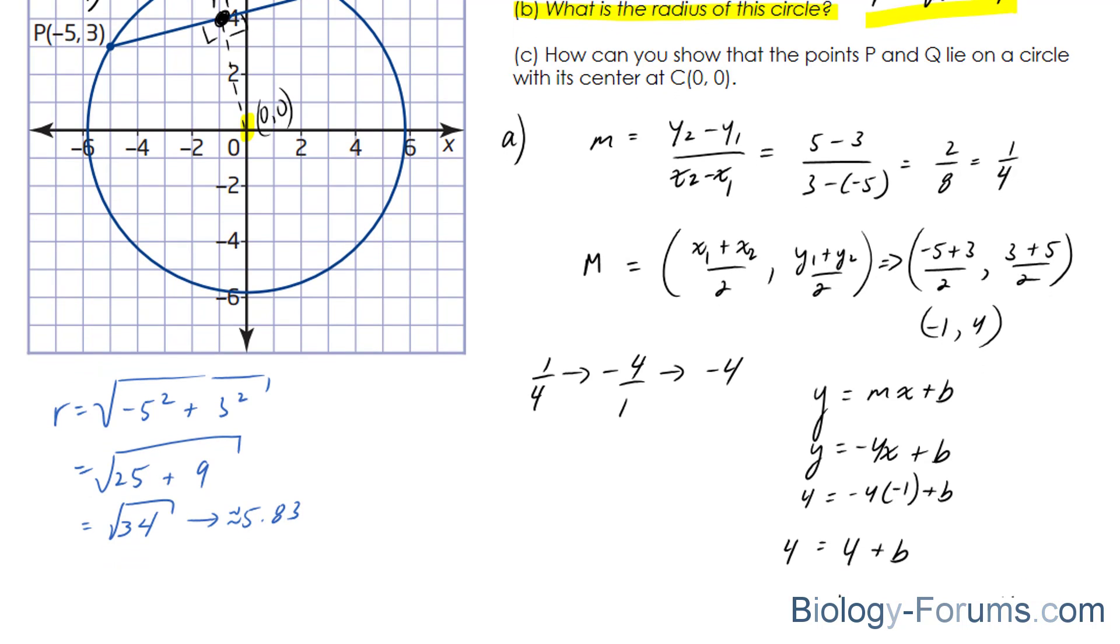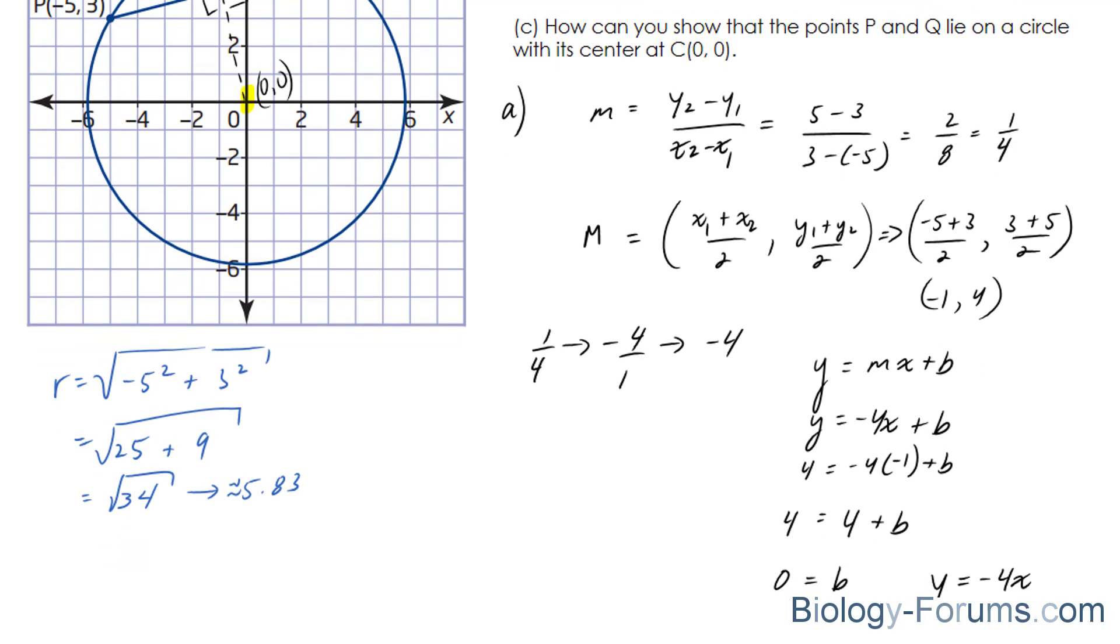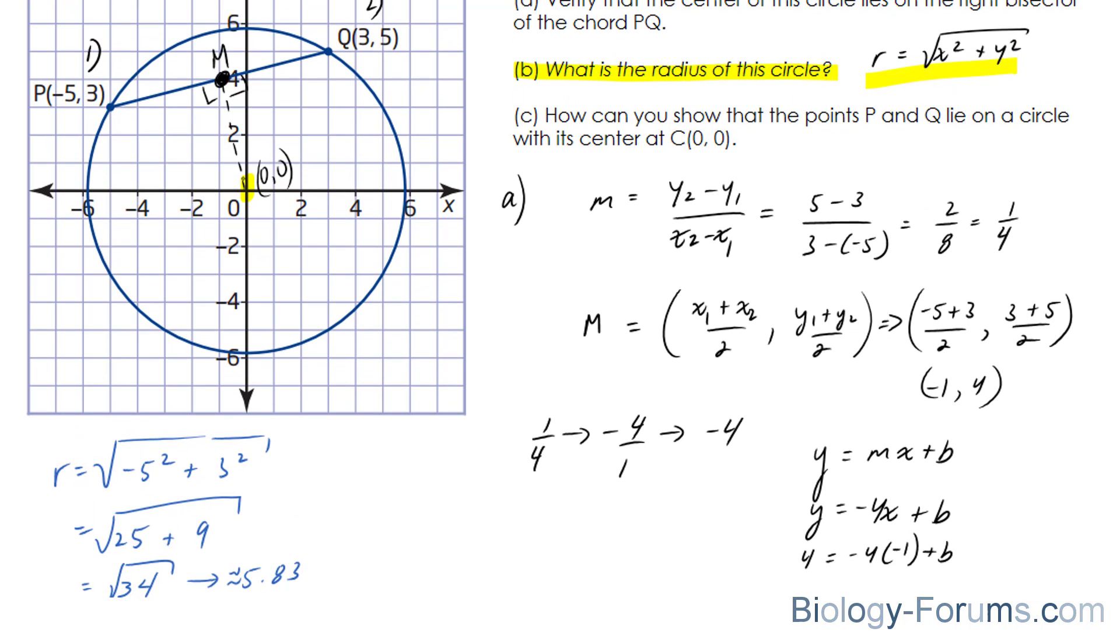And in the last question, we are asked, how can you show that the points P and Q lie on a circle with its center at 0 and 0? Now, what you can do in a situation like this is find the distance from this point to this point and the distance from this point to this point. And if the distance is equal to 5.83, then you have shown that P and Q lie at a circle with the center 0 and 0.